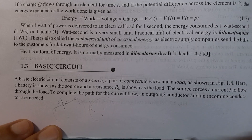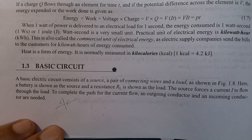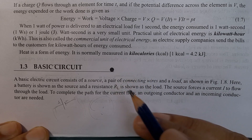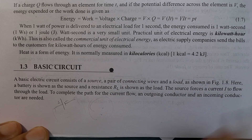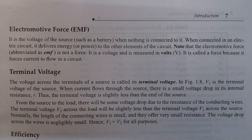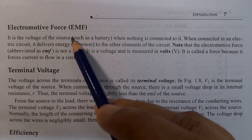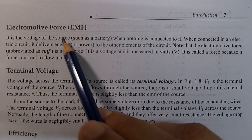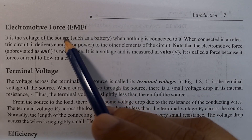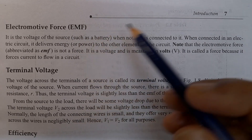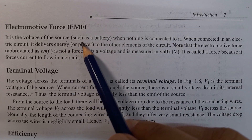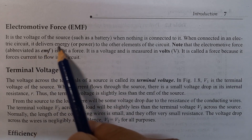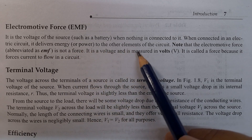The current enters from the source and completes one closed path. When the circuit is open, current is zero. EMF stands for electromotive force. It is the voltage of the source, such as a battery — it is the voltage source when nothing is connected to it.